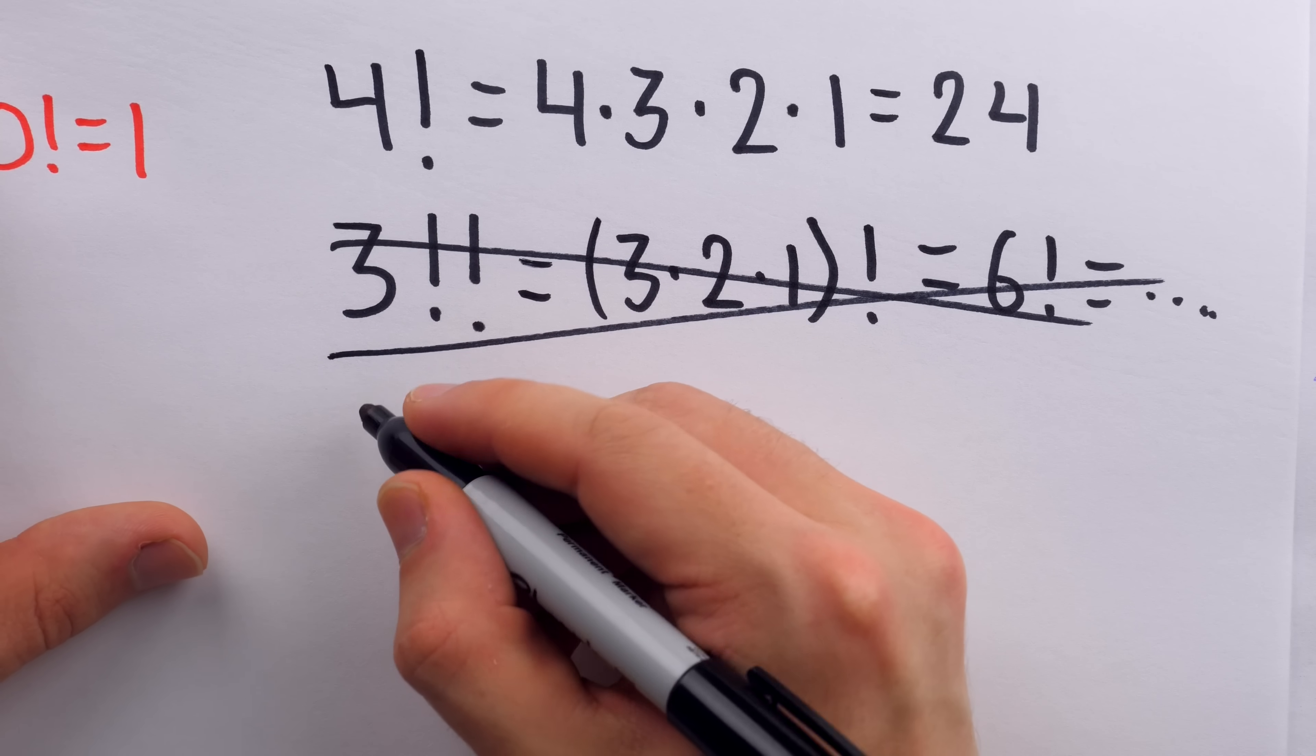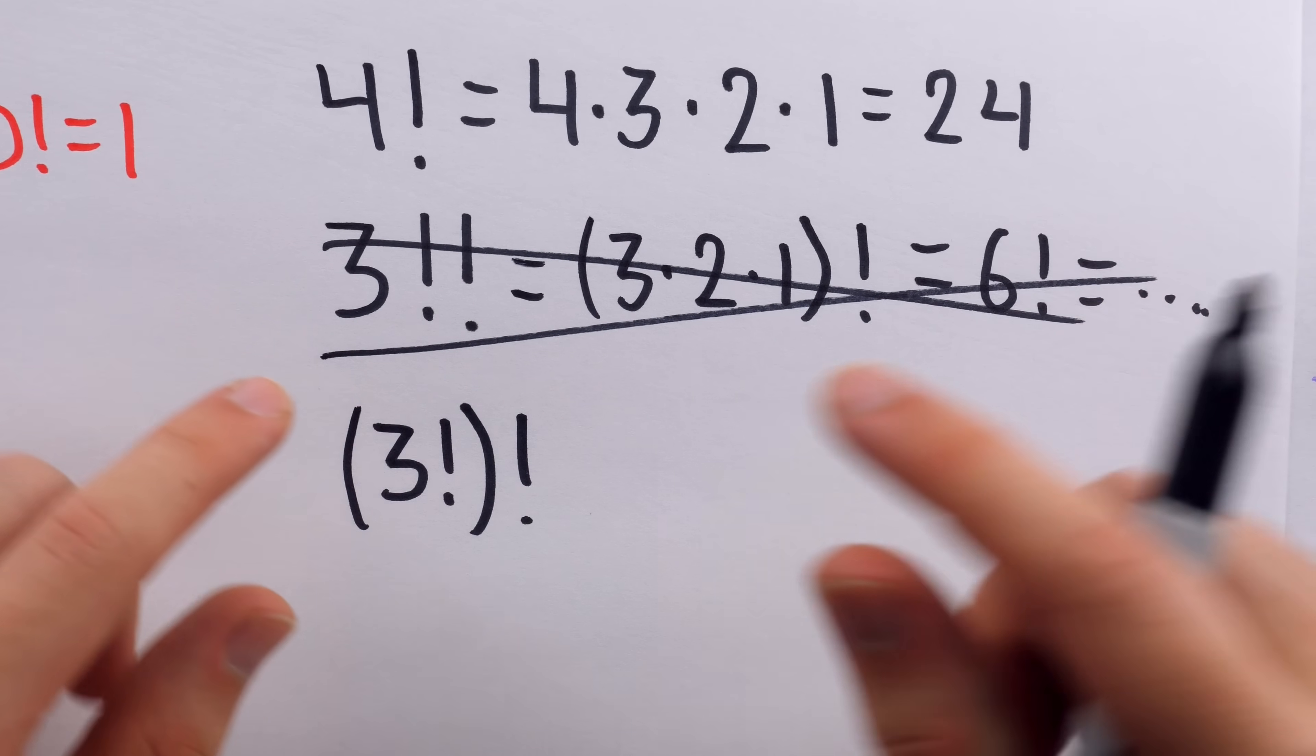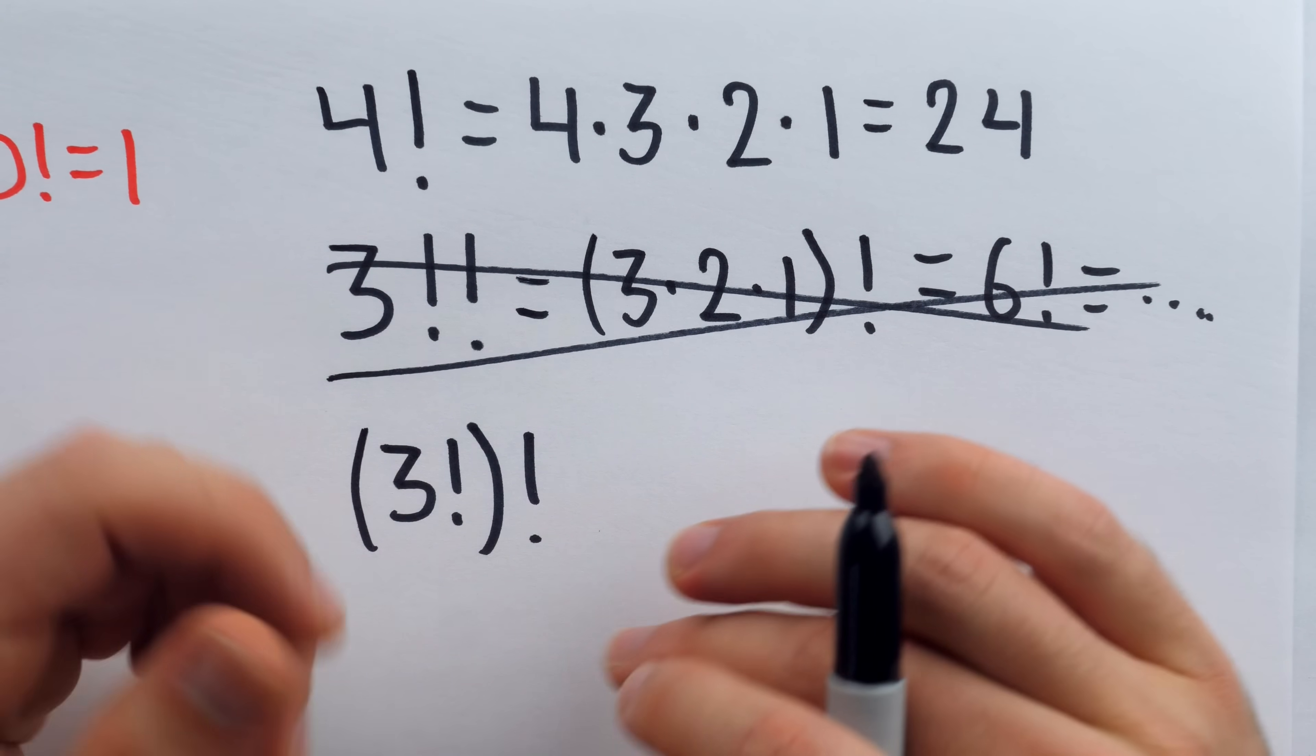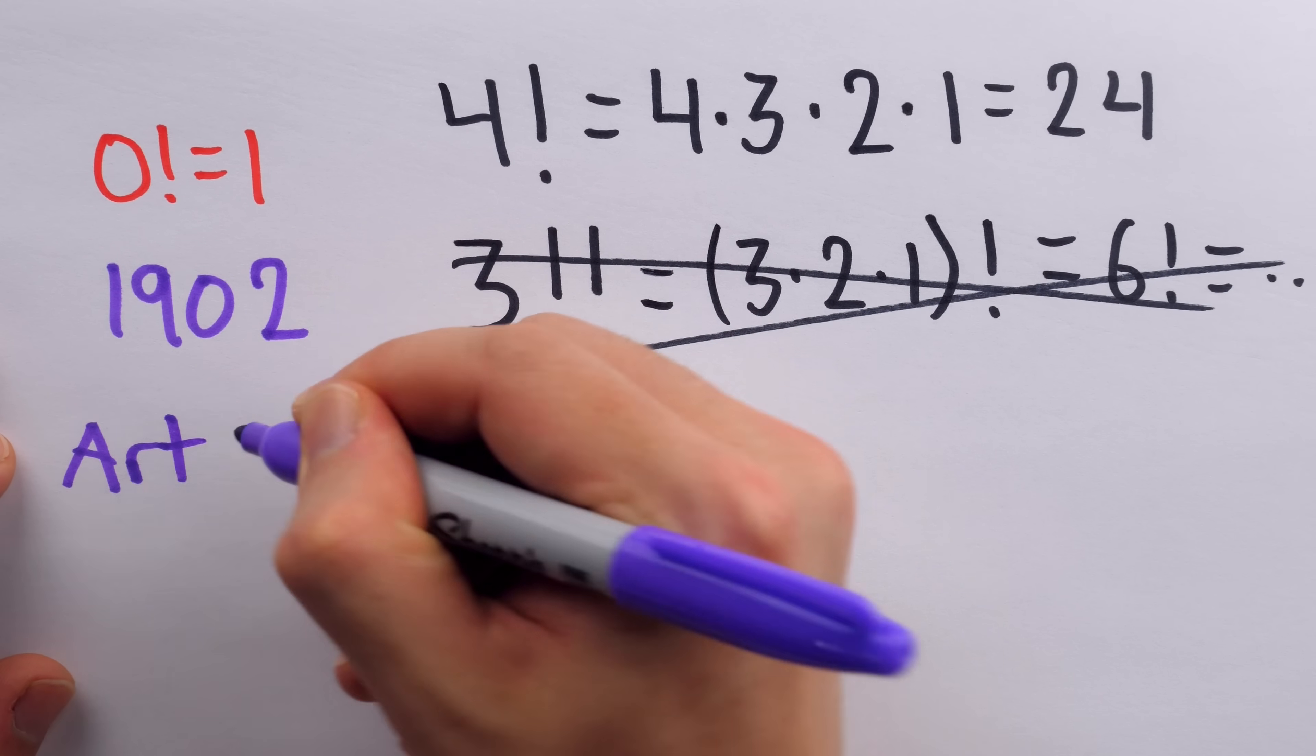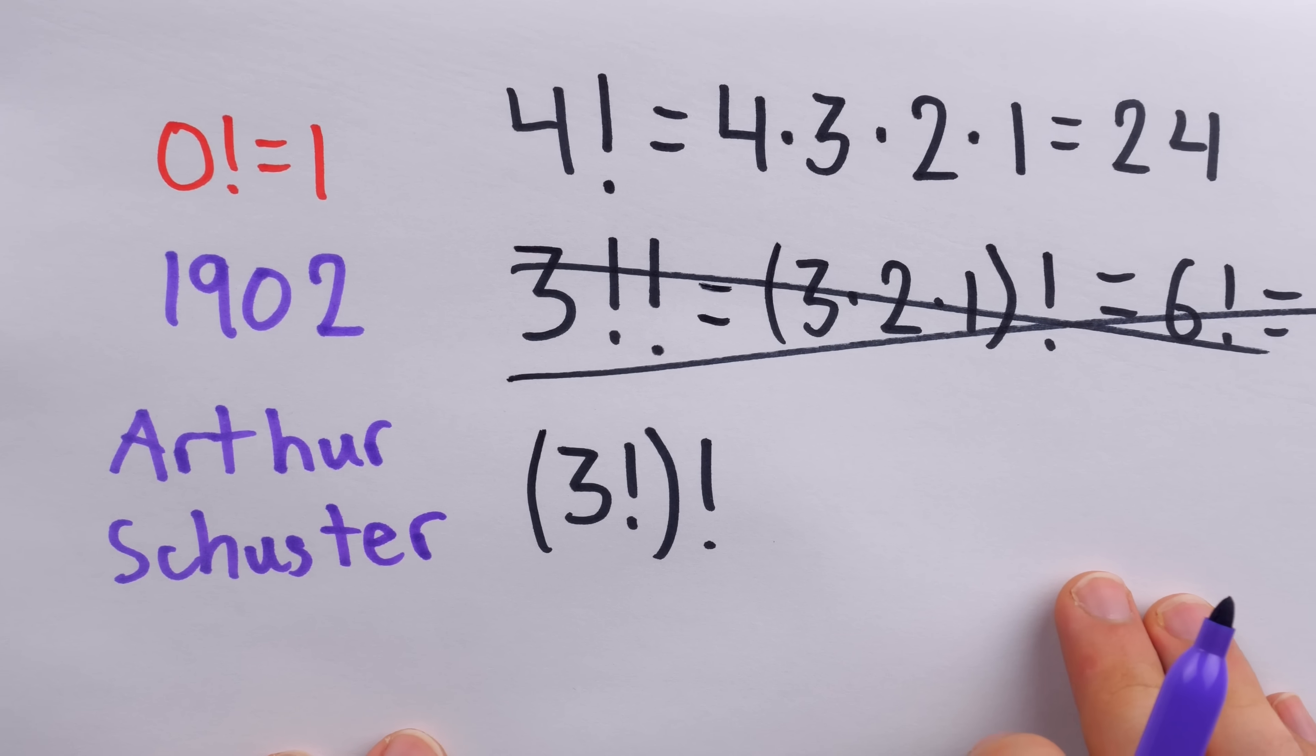If you did want to write this expression, you'd have to write it like this. 3 factorial closed in parentheses with a factorial outside of that. But if you've got two factorials right next to each other, you're no longer talking about factorial. You're talking about the double factorial, also called the alternating factorial. If you're curious, by the way, the notation for the double factorial was introduced in 1902 by a fella who went by the name Arthur Schuster. I think I've spelt that right. But anyways, let's see this great notation that Mr. Schuster introduced and see what it means.